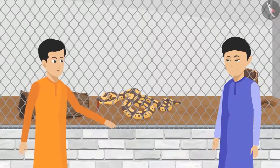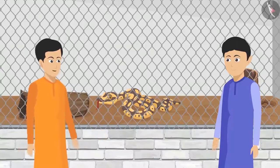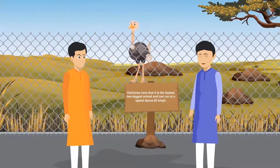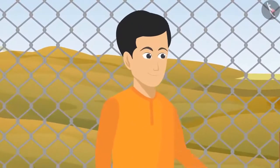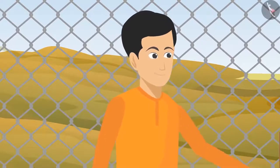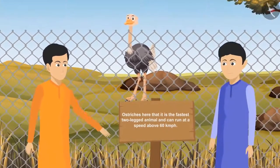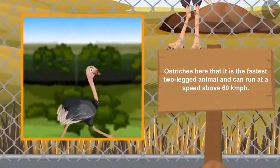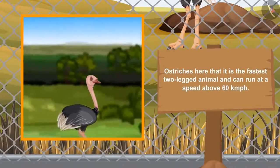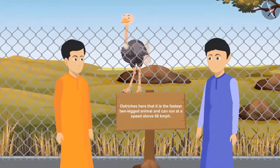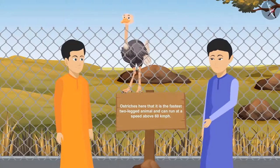'Wow, can you see that ostrich over there? Let's go see it!' 'Wow, how huge this bird is — I had only seen it in books. Do you know it can't fly?' 'Yes, I know.' 'And do you know that an ostrich kick is so powerful it can even kill a person if it hits the head? Look, something is written about the ostrich here — it is the fastest two-legged animal and can run at a speed above 60 km per hour!' 'What! It's really an awesome animal. Let's move ahead.'